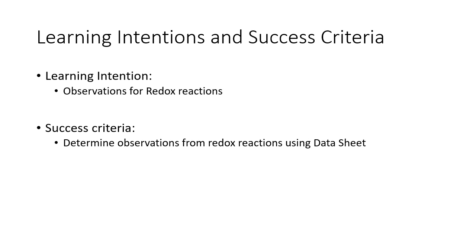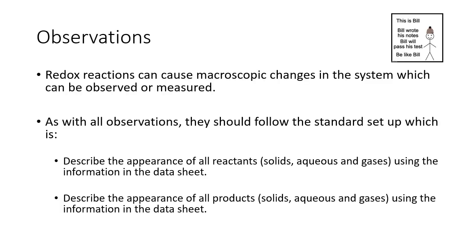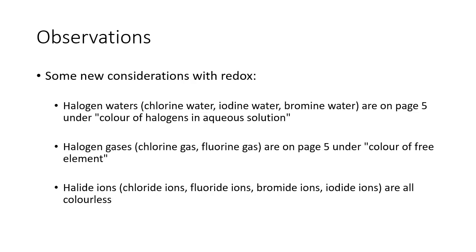Determine the observations from redox reactions using the data sheet. Redox reactions can cause macroscopic changes — like color changes — which can be observed and measured. With all observations, you should follow the standard setup: describe the appearance of all reactants using the information in the data sheet, and then describe the appearance of all products as well, using the information on the data sheet.